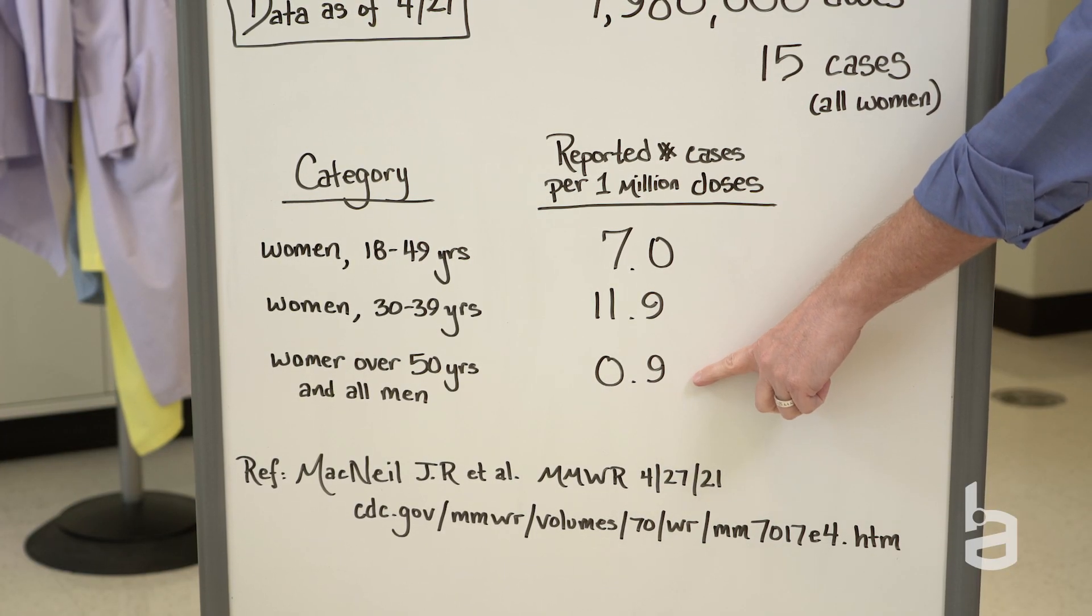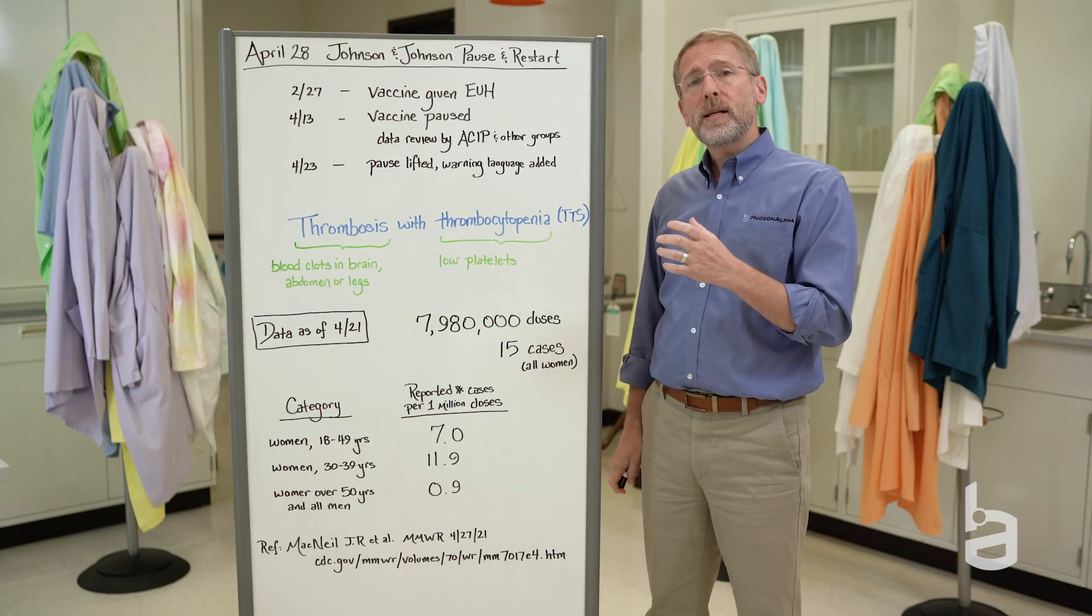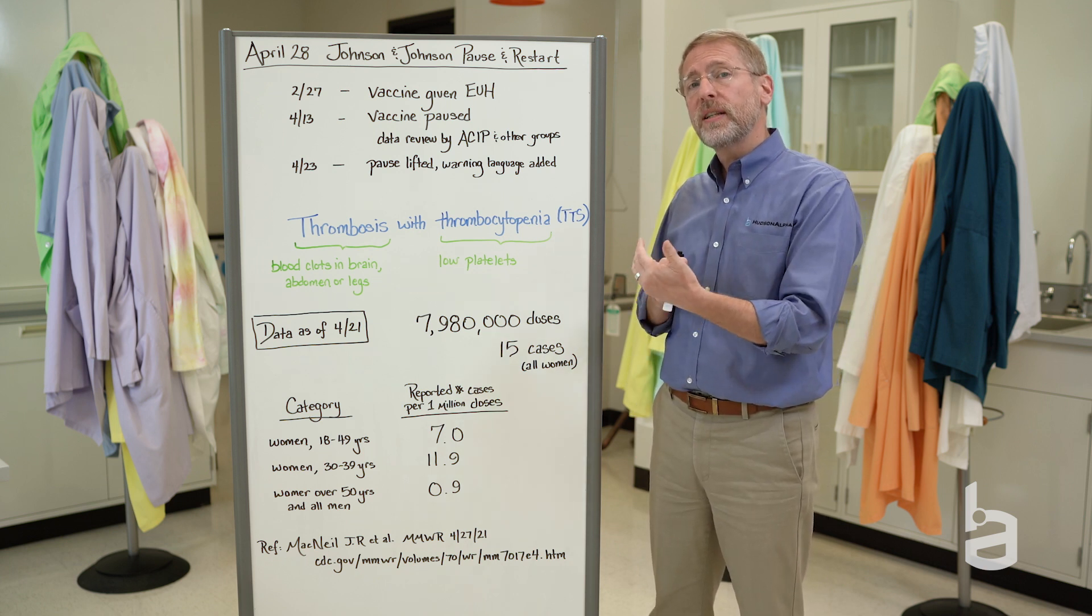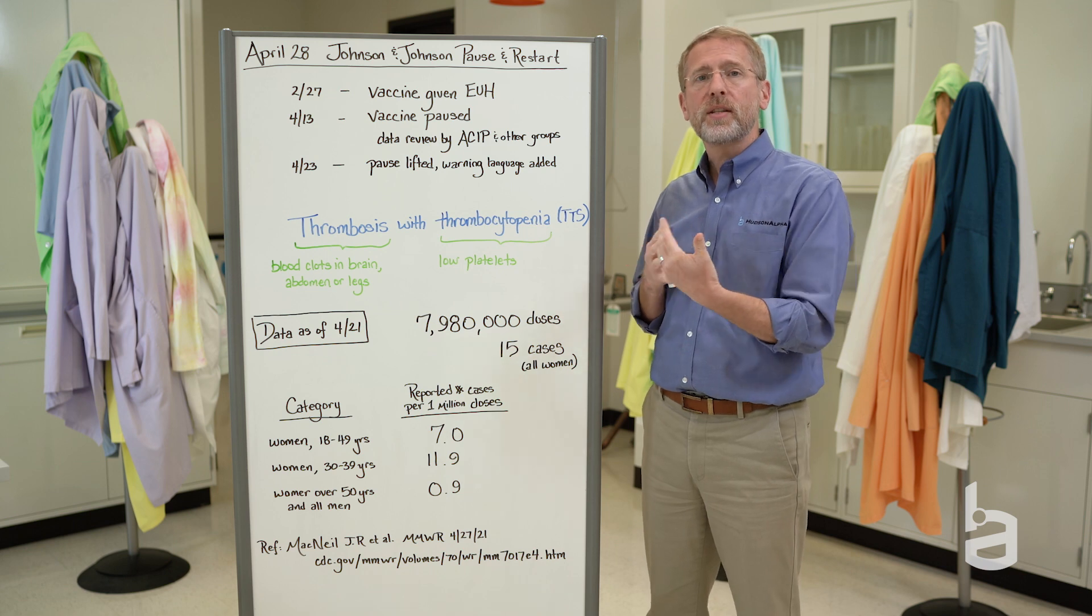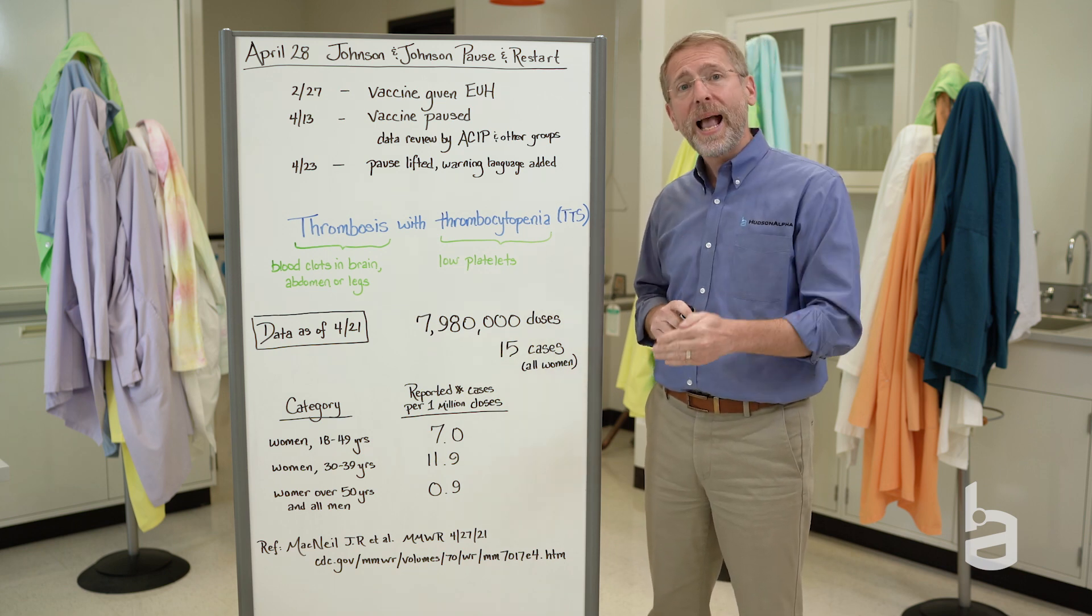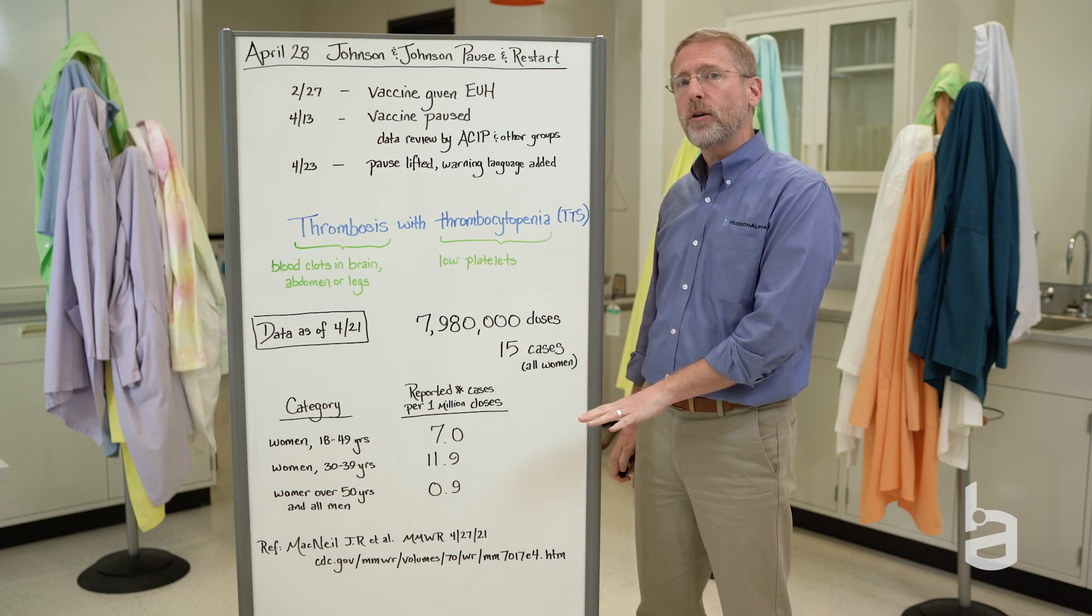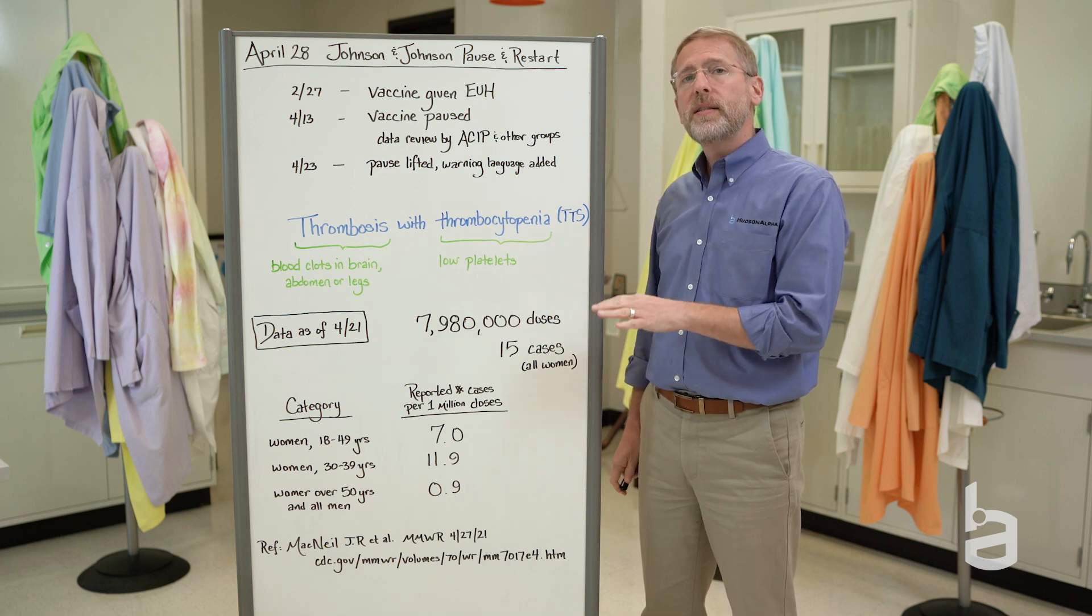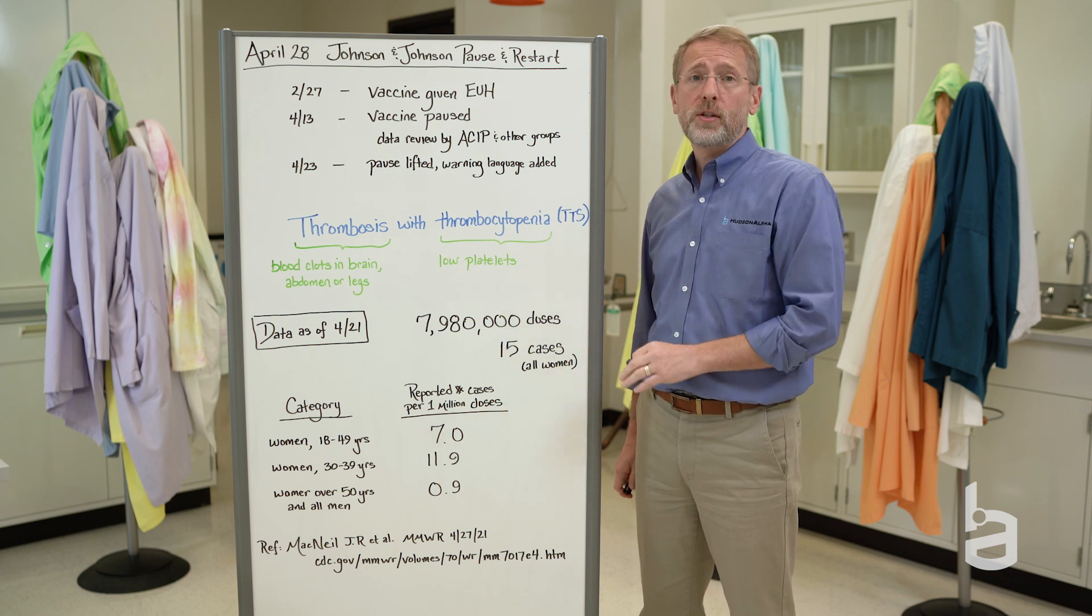Women over the age of 50 and men of any age, much, much lower, less than one case per million. So number one, you're talking about something that primarily happens in women and that seems to happen specifically in younger women. This seems to be some sort of an immune response, an immune reaction to something in the vaccine. We don't have that level of science yet. So we have to wait to gather more data to truly be able to say, here's what that trigger is. But this is definitely a rare but serious side effect from the Johnson & Johnson vaccine.